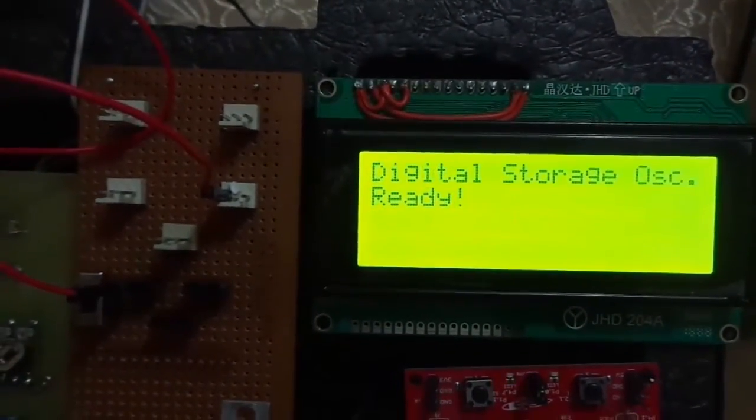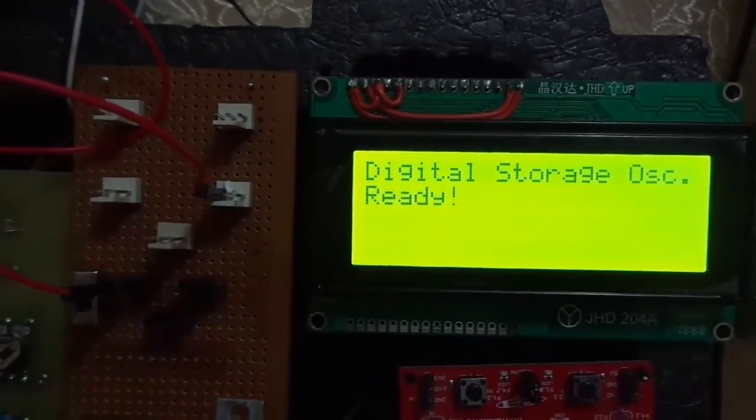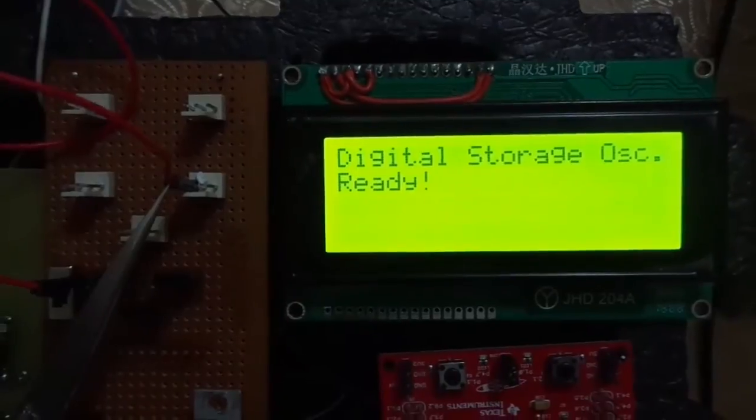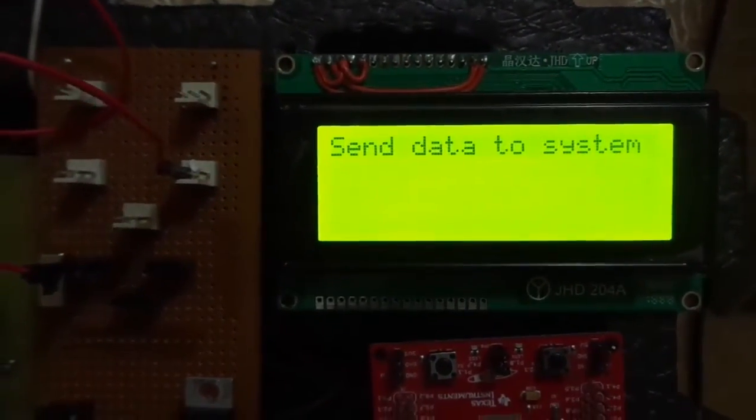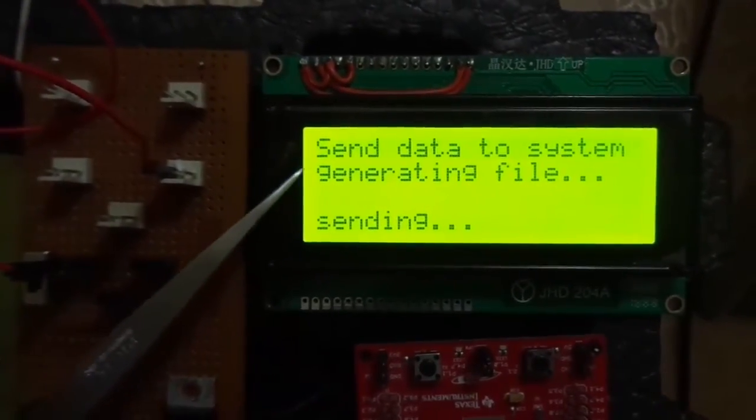Now we will demonstrate the digital storage oscilloscope. As you can see we have applied the square wave from the output terminal to the input terminal of the DSO. Now we will select the option to send data to system. You can see the data is being sent to the system.